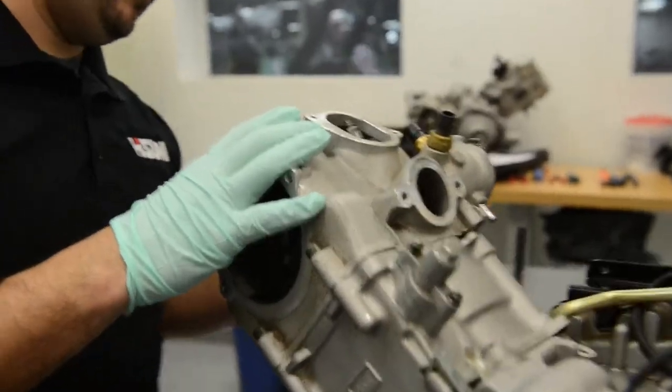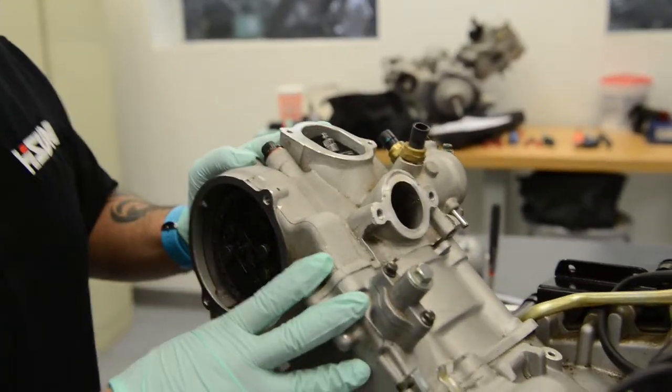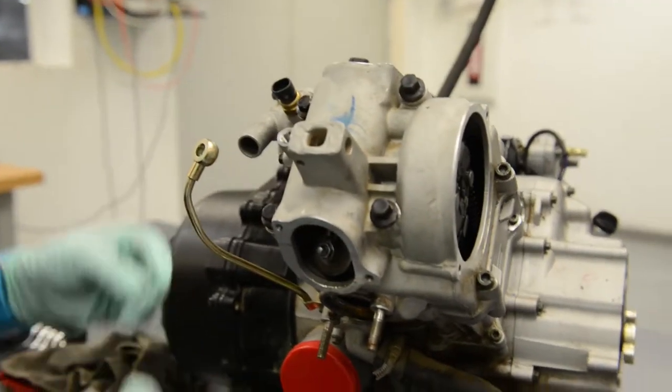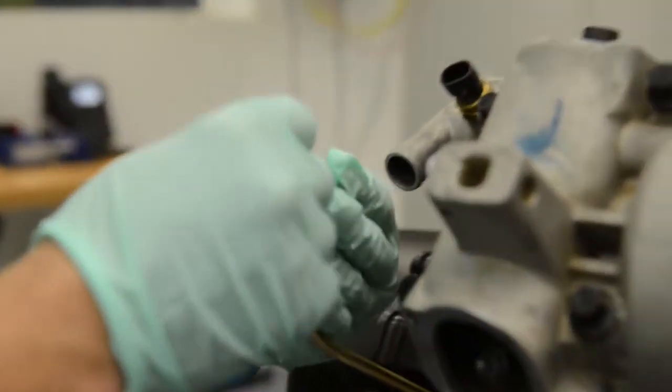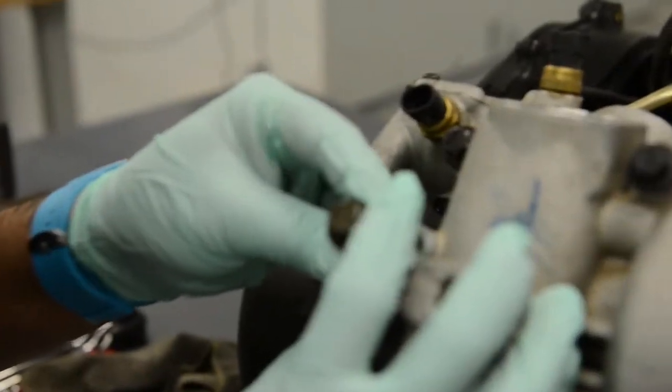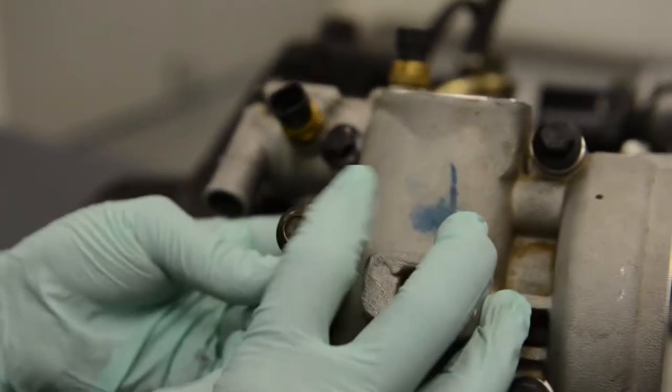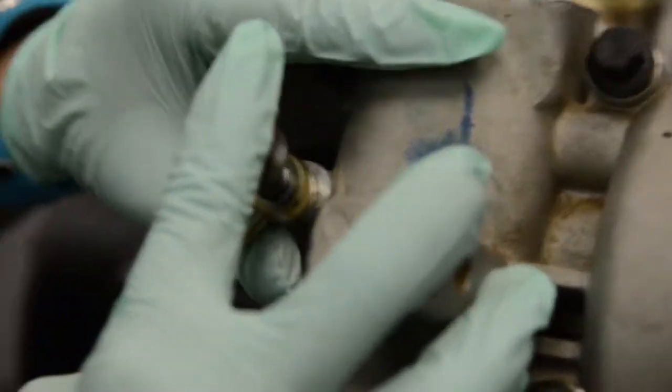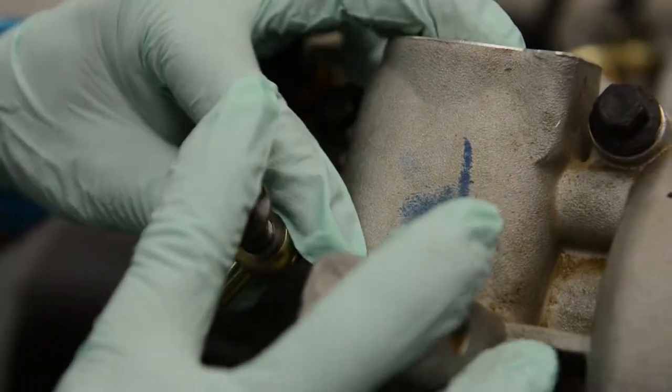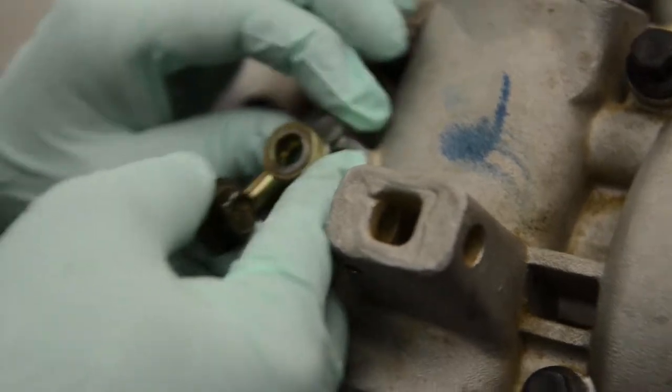Once your head is installed, you'll reverse steps and reinstall your covers. Once you've done this and your head has been torqued down, go ahead and reinstall the oil pipe. Make sure to use both your washers. Make sure to install this correctly, not to cross-thread. Both copper washers must be installed so this does not leak.